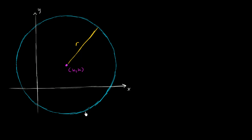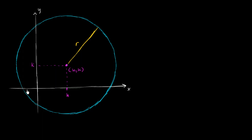I've drawn a circle here with radius r, and its center is at the point h, k. So its x-coordinate is h, and its y-coordinate is k right over here. What I want to do is figure out a general formula for the equation of this circle.